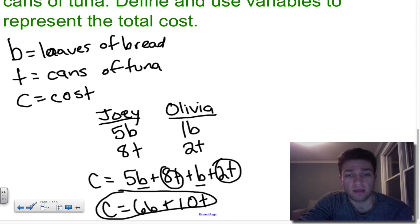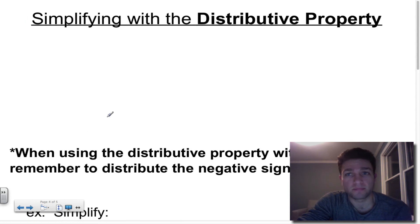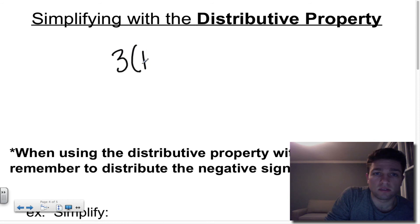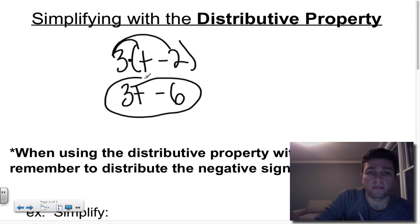The last concept I want to look at in this section is simplifying with the distributive property. Now, the distributive property, many of you know, is in its most basic form, like this. I've got some number and then I've got something inside of parentheses and I need to distribute to everything because what's really here, multiplication. And the multiplication goes to every piece that's inside of the parentheses. So this little example would end up looking like this, because 3 times t is 3t and 3 times 2 is 6. So I've got really 3t minus 6.